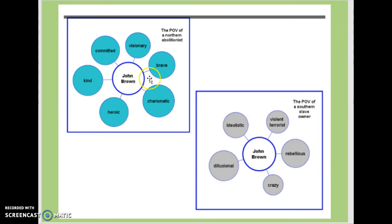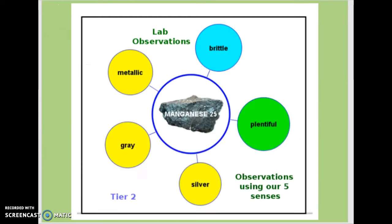I really like this one for point of view. This is combining social studies and language arts standards — we have the point of view of a northern abolitionist compared to a southern slave owner, but it's about the same person. You could have a debate and include speaking and listening standards. I'm using five senses on a science lab. We've covered that every single subject can use adjectives and a bubble map — it's not just for language arts.